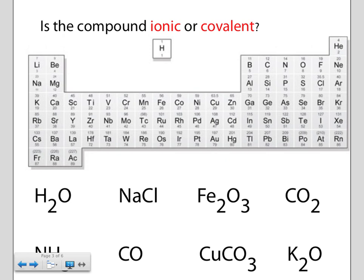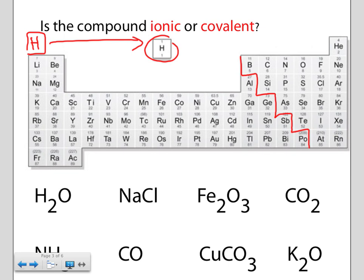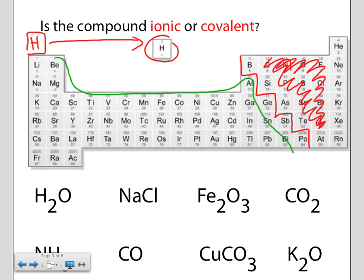Here is our periodic table. You've got to look at that boundary line between the metals and the non-metals. Remember, hydrogen is often written over here, but in this periodic table we treat hydrogen as a non-metal. So here are all our common non-metals that we find in compounds. And most of the elements, of course, are actually metals.